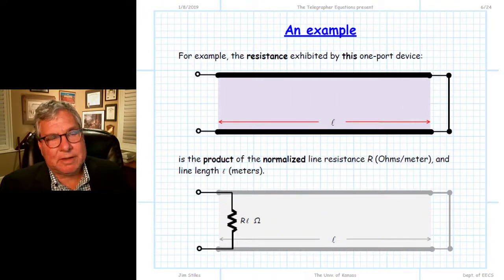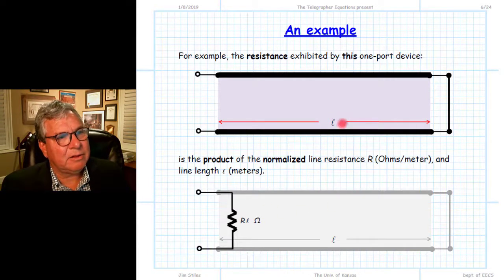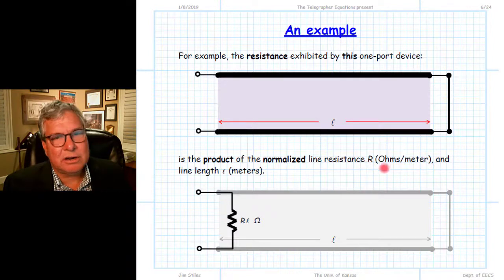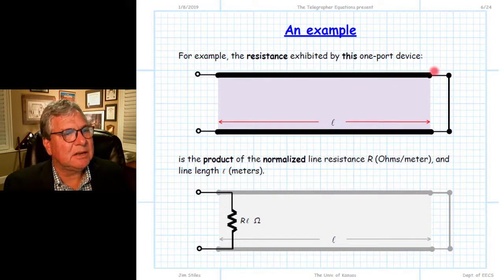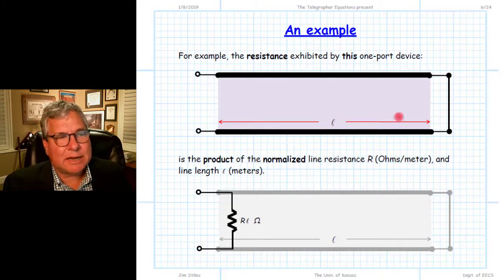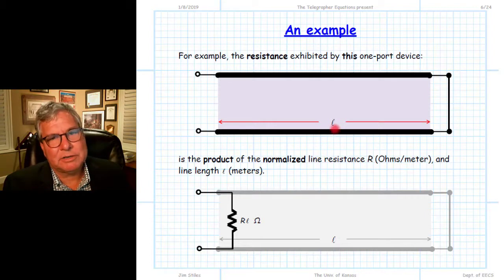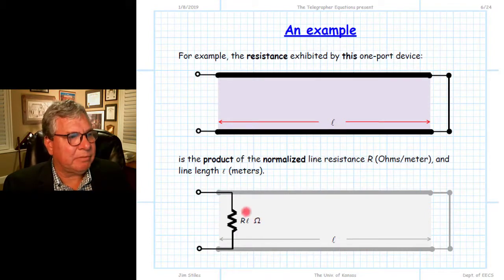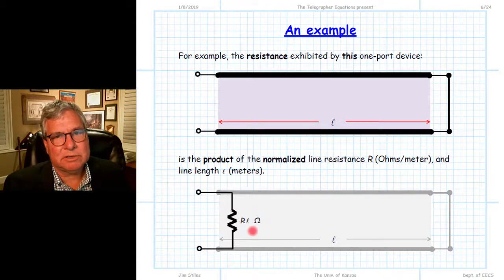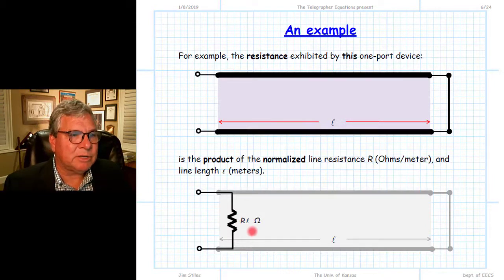For example, if we have a length of transmission line L with resistance R in ohms per meter, the total resistance is simply the normalized resistance in ohms per meter multiplied by the length in meters. Generally speaking, this would be a very small number.